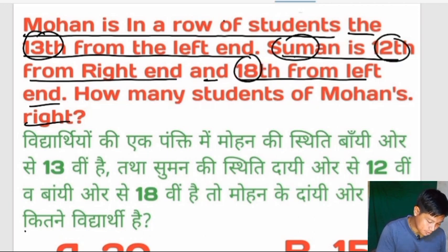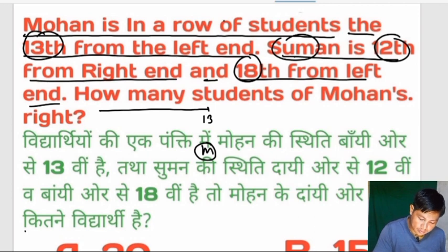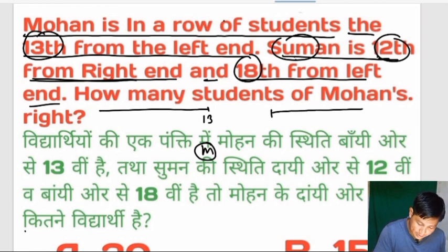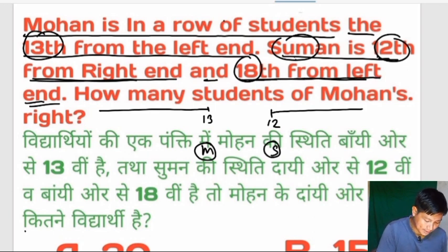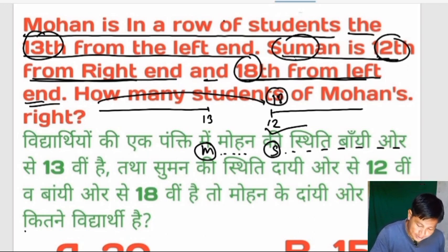First, Mohon is 12 from the left, Sumon is 12 from the right. Working through the right side: 12 from the left, Sumon is 12 from the right and 12 from the left. The second part: the right side, 12 from the right.